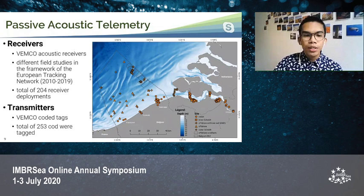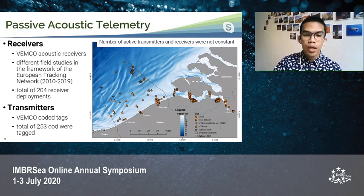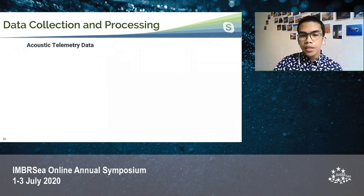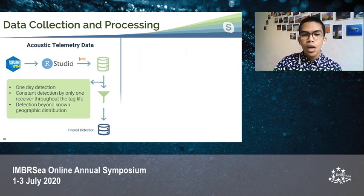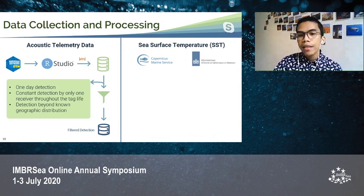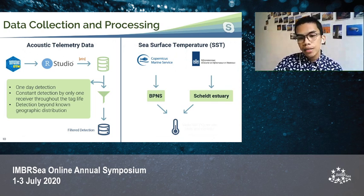The receivers and transmitters were part of different field studies within the framework of the European tracking network from 2010 to 2019, by which the number of active receivers and transmitters were not constant. Acoustic telemetry data was retrieved from the ETN database and filtered by removing one-day detections, constant detections by only one receiver throughout the life of the tag, and detections via non-geographic distribution of the fish. Sea surface temperature was used as a proxy for water temperature experienced by the fish, retrieved from Copernicus Marine Service and Rex Waterstat, and both daily and monthly mean SST were calculated per site.